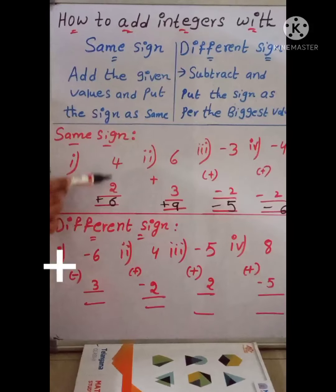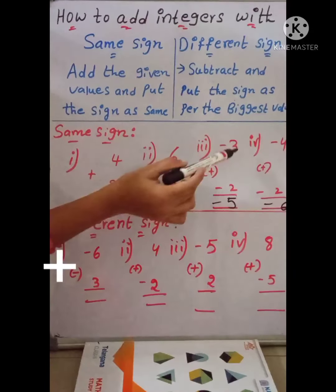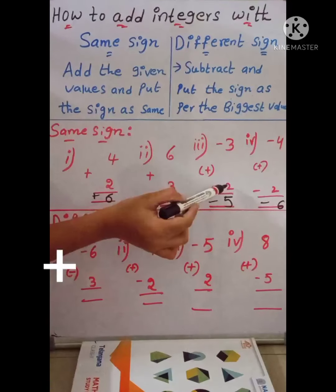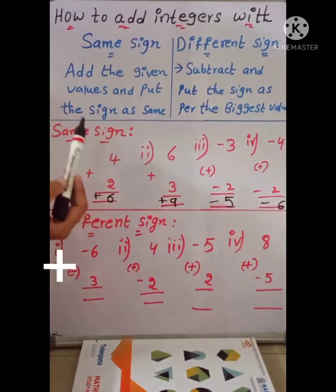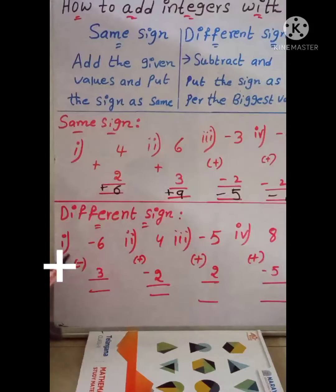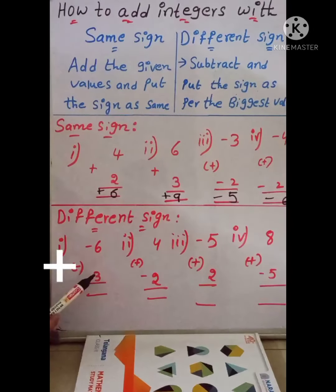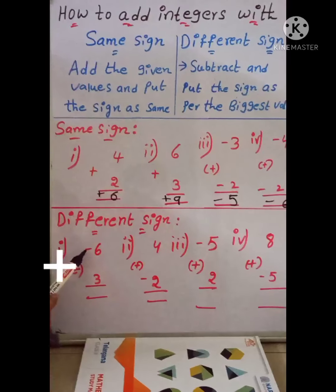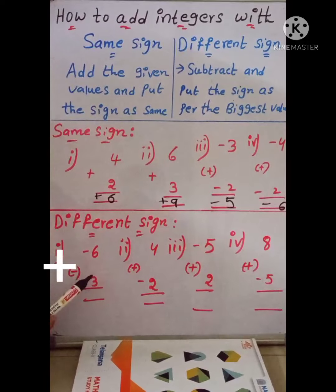If both numbers are positive, add and put the sign as positive. If both are negative values, just add them and put the sign as negative. Now, coming to how to add integers with different signs. Let's see some examples. The first one is minus 6 plus 3. One is a positive value and the other is a negative value. Whenever we are adding with different signs, just subtract.